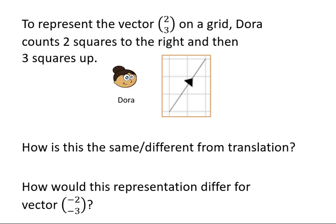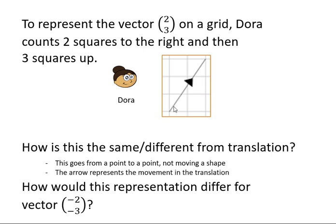In this diagram, Dora represents the vector (2,3) as a line with an arrow. How is this the same or different from the translations that we were looking at? Well, first of all, this representation is going from a point to a point. It's not how a shape has been moved across a grid. It describes the movement itself, not the shape and the shape and trying to describe what happens between the two. It shows how that point would go to here in this translation, in this vector. And this is a really useful way of representing vectors.